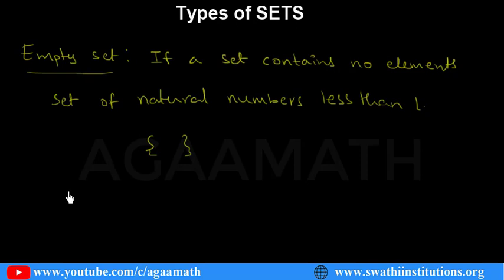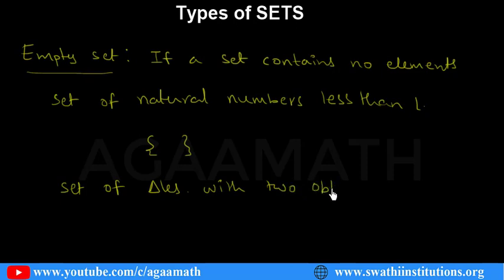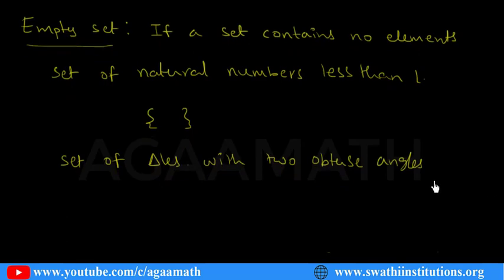Another example: the set of triangles with two obtuse angles. Obtuse means an angle greater than 90 degrees. In a triangle, no two angles can both be greater than 90 degrees, so you cannot get any such triangle. This set is also an empty set. Similarly, the set of months in a year that have more than 31 days — no month has more than 31 days — so that is also an empty set.